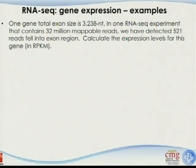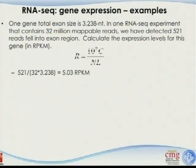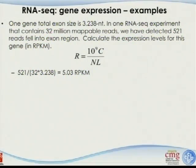Here's an example I made up. One gene has a total exon size of 3,000 base pairs. The RNA sequencing experiment contains 32 million mappable reads, and we detected 512 reads in the exon region. To calculate RPKM, you take the total count, divide by the K — which is 3 (representing 3,000 base pairs, in units of 1,000) — and the M, which is 32 (the 32 million reads, in units of millions). The result is close to 5 RPKM. Very simple and straightforward.